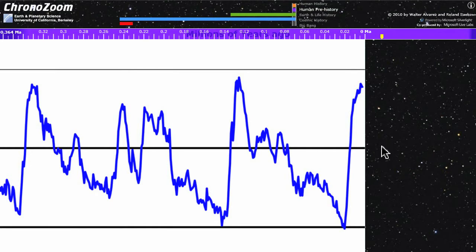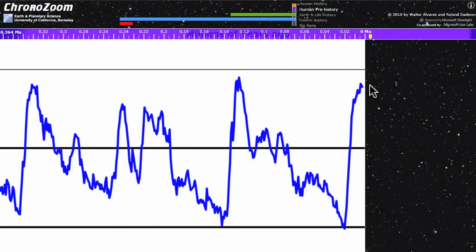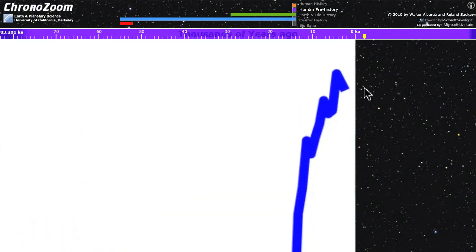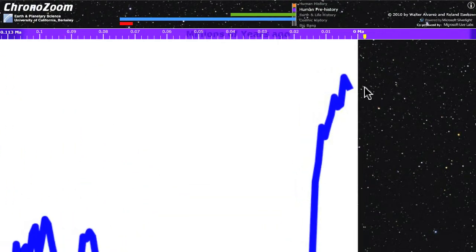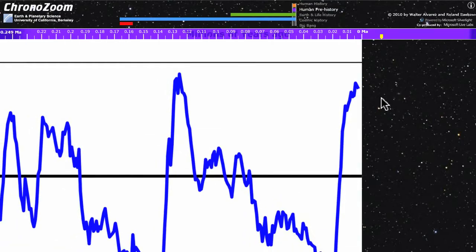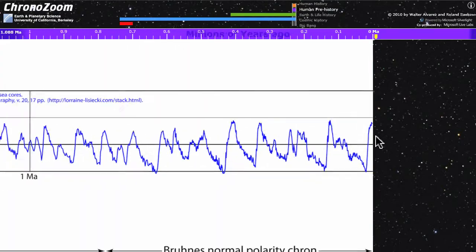It's the time in which the glaciers on top of Canada melted rather rapidly and left us with the world that we've lived in for the last 10,000 years in which there are glaciers on Antarctica and Greenland but not on Canada.